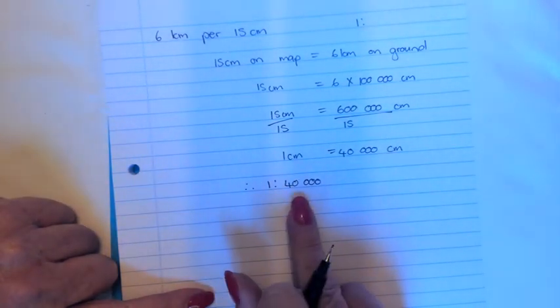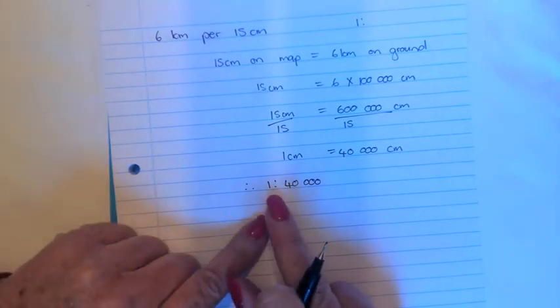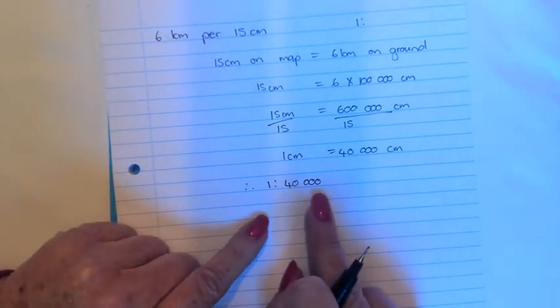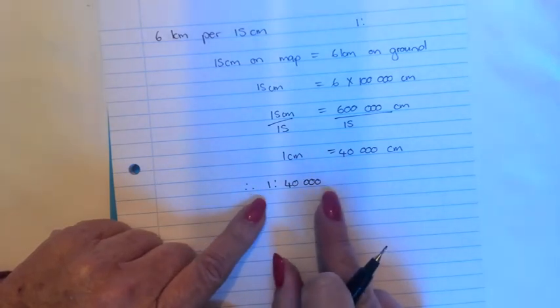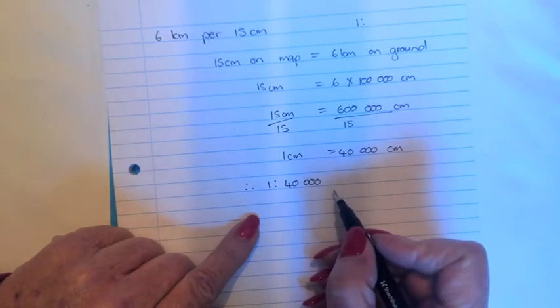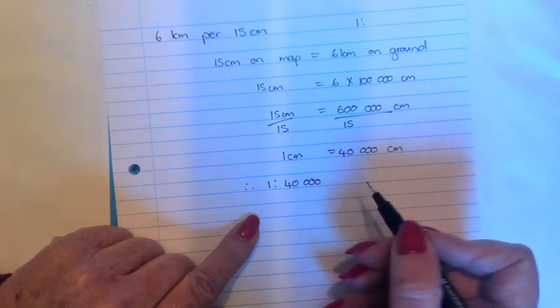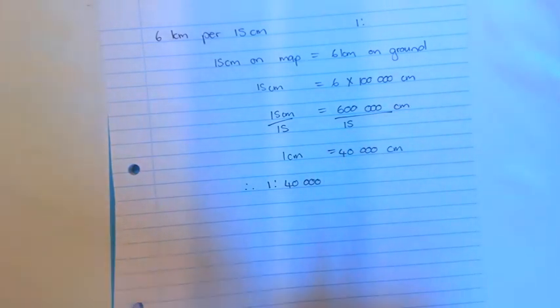Now the nice thing about a ratio scale, you can assign any unit of measurement you want to. You can say one millimeter equals 40,000 millimeters or one meter equals 40,000 meters. It doesn't matter. But you will see a ratio scale is always unitless because you can assign any unit you want to. So let's look at a second example under section 3.1.